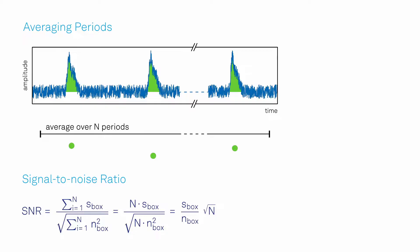The moving average over multiple periods improves the signal-to-noise ratio since the captured signal increases linearly, while the captured noise increases only with the square root of the number of periods.